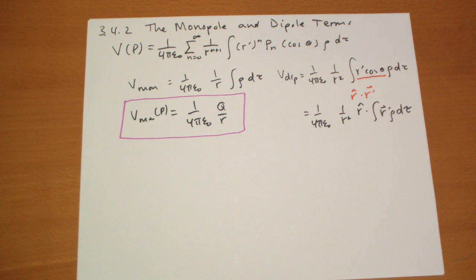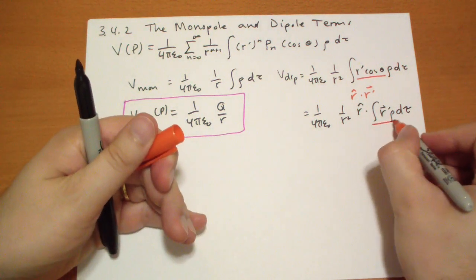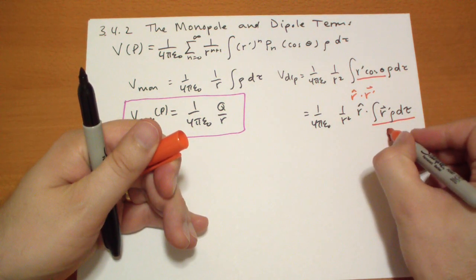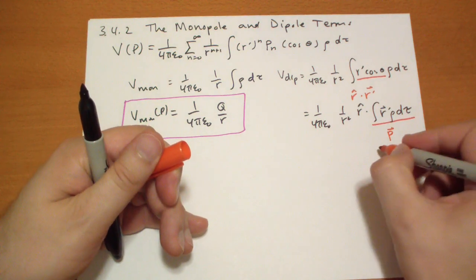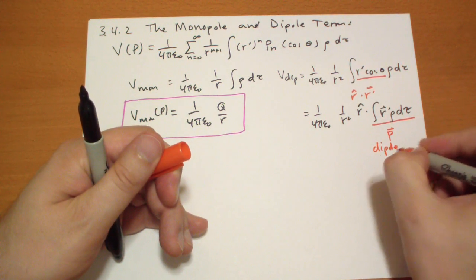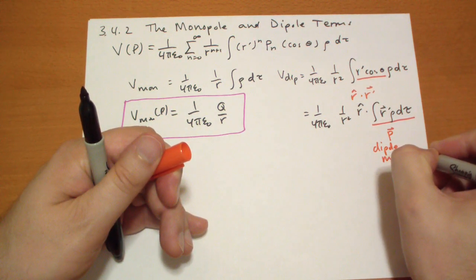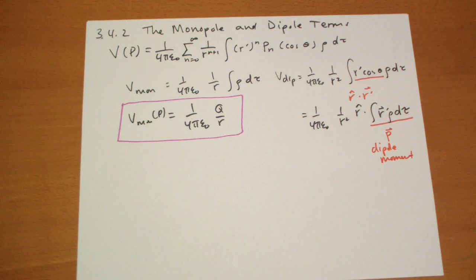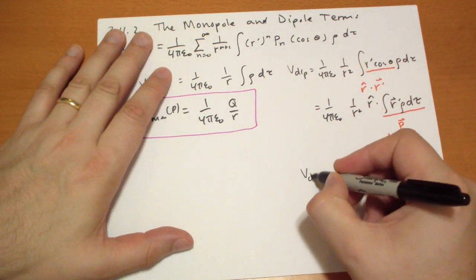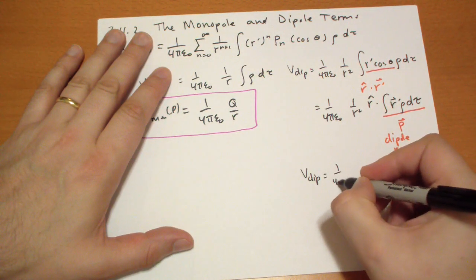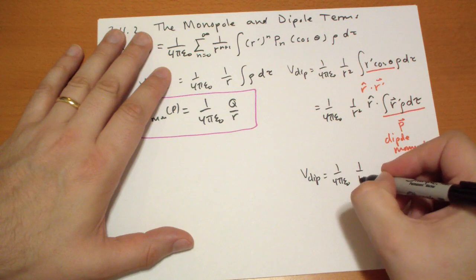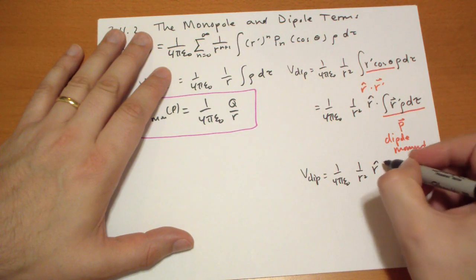And then you can rewrite that. This little chunk here, we call that the dipole moment. It is a vector. It has a magnitude and direction, just like other vectors. And so now we can rewrite our V_dipole as equal to 1 over 4 pi epsilon naught, 1 over r squared, r hat dot p, the dipole moment.